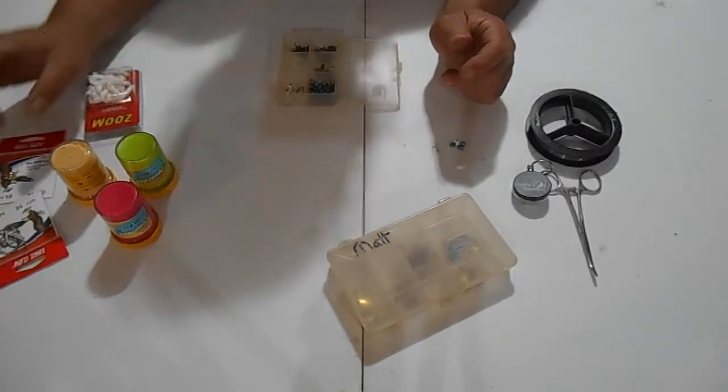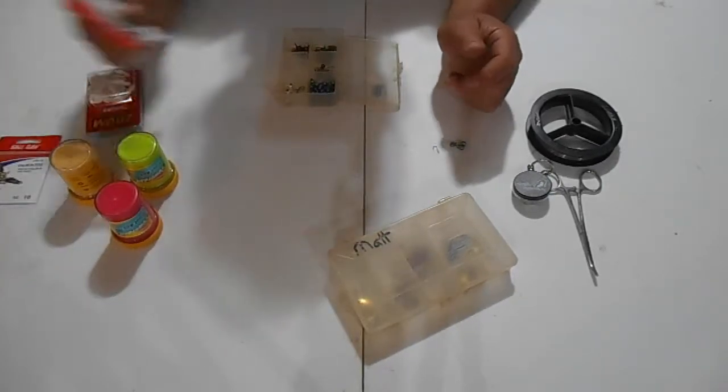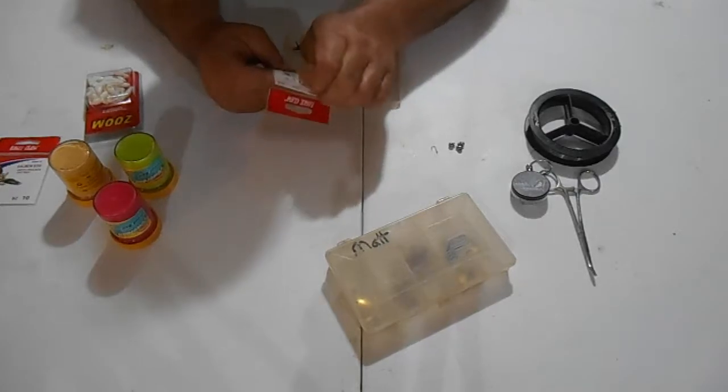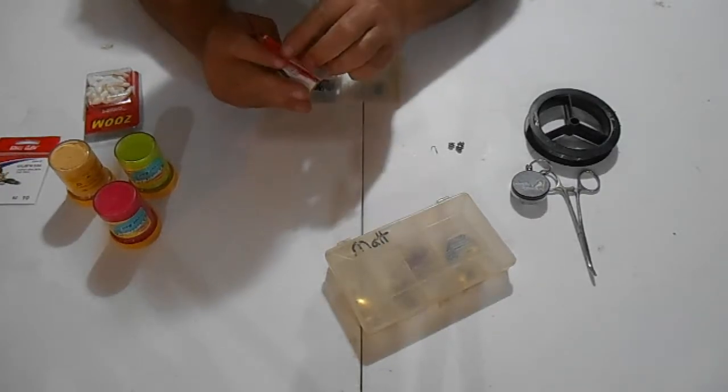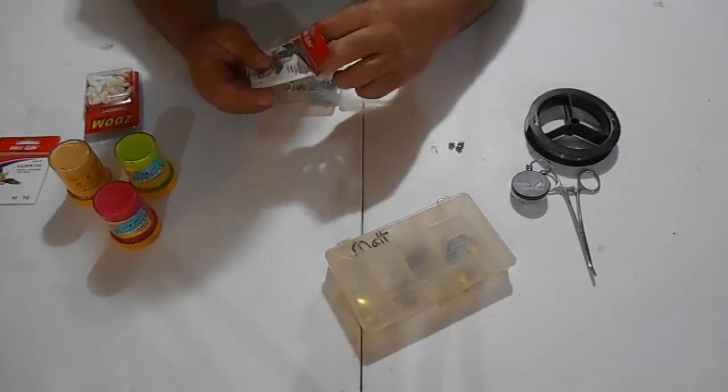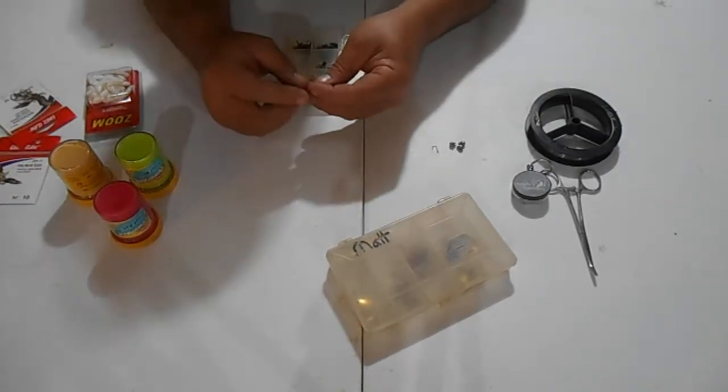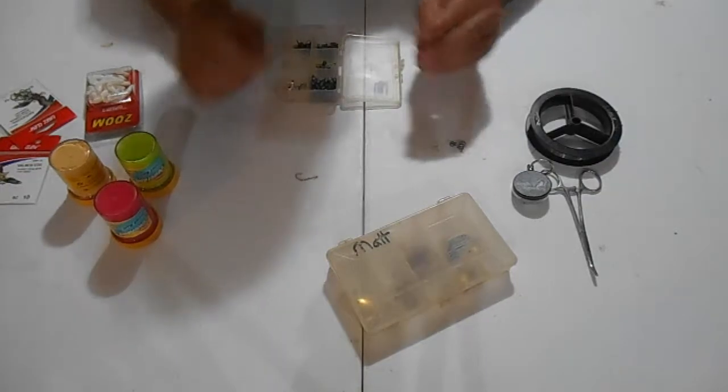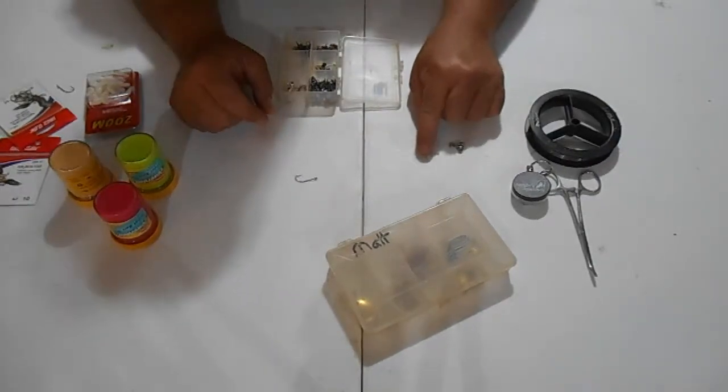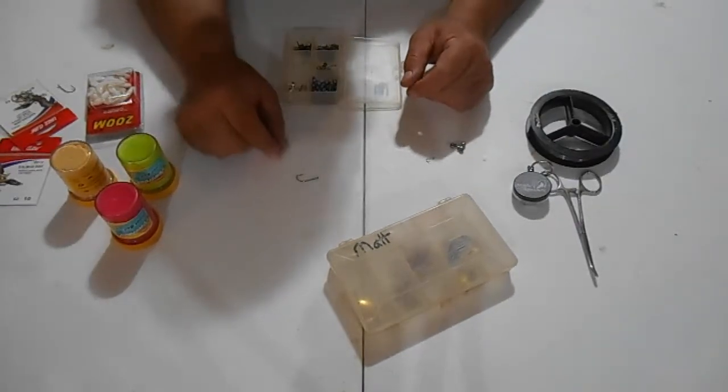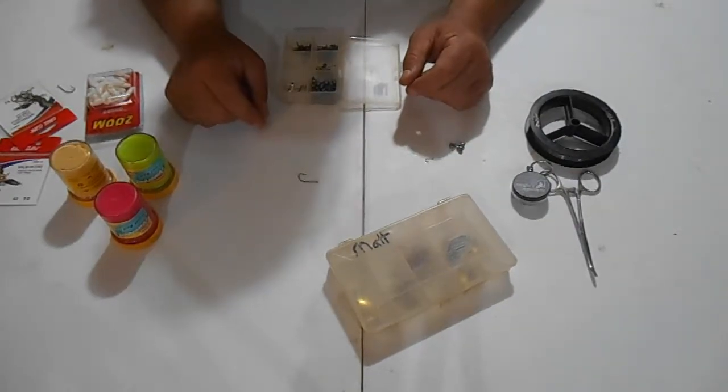Now if I'm using a worm or a cricket, grasshopper or something like that, I use just a little bit bigger hook. This is a number four. And it's called a bait holder. It would be hard to put a worm or a cricket or anything on that small of a hook. It works great with a dough ball. But this works better with a worm.